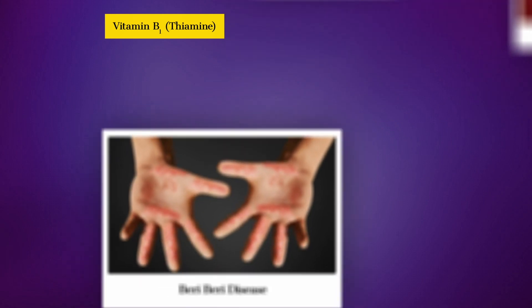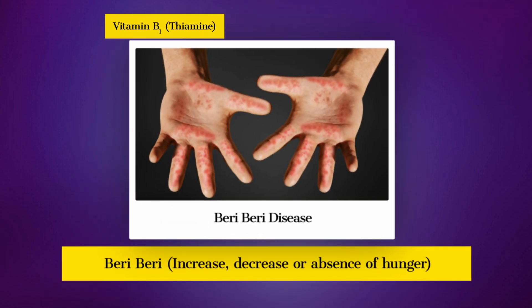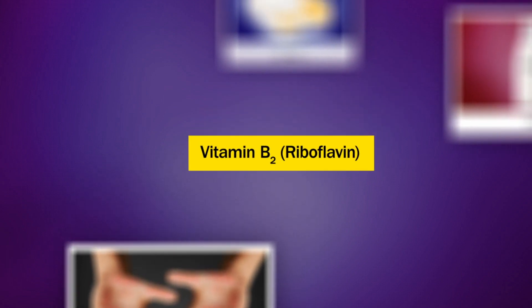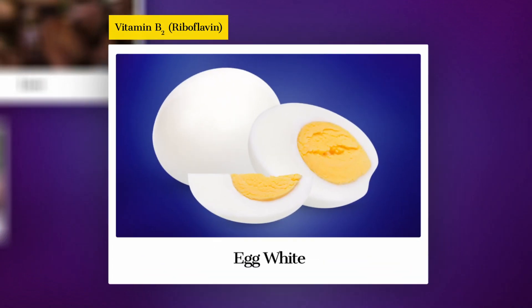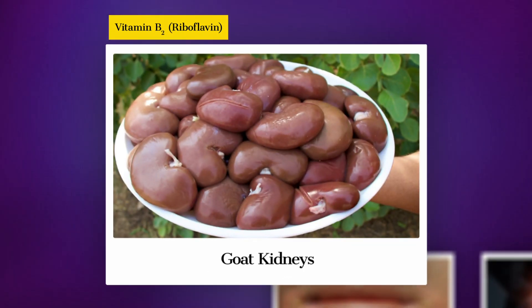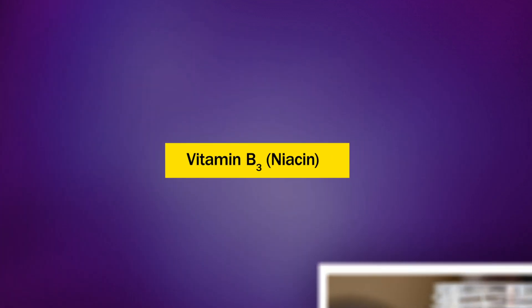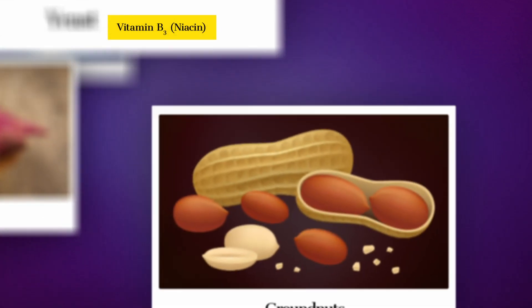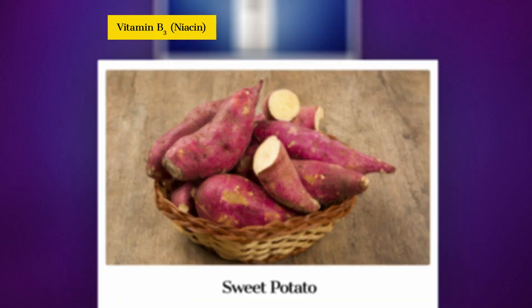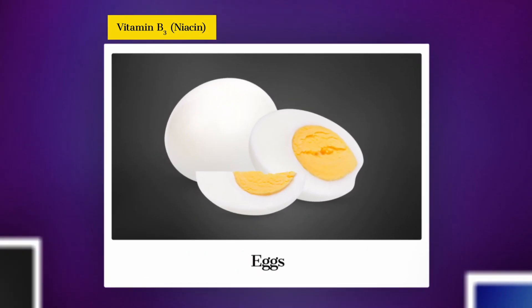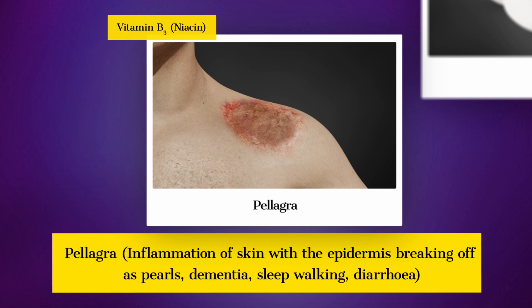Vitamin B2 (Riboflavin): Sources — milk, egg white, liver, and kidney. Deficiency disease — chelosis, fissuring at corners of mouth and lips, digestive disorders, and burning sensation of the skin. Vitamin B3 (Niacin): Sources — yeast, groundnut, sweet potato, and eggs. Deficiency disease — Pellagra, inflammation of skin with epidermis breaking off, and dementia.